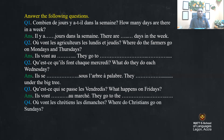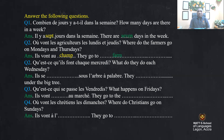Ils se réunissent sous l'arbre — they gather under the big tree. Ils vont vendre au marché — they go to the market to sell. Où vont les chrétiens les dimanches? Where do Christians go on Sunday? Ils vont à l'église — they go to church.